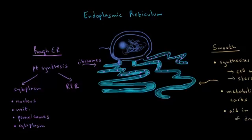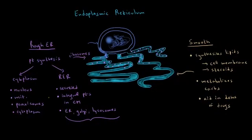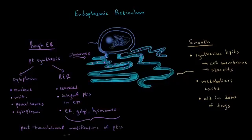In contrast, proteins that are synthesized in the rough endoplasmic reticulum will either be secreted into the extracellular environment, or they will end up becoming integral proteins in the cell membrane, or they might remain in the endoplasmic reticulum, Golgi apparatus, or lysosomes. Another thing that happens in the rough endoplasmic reticulum is post-translational modifications of proteins — for example, the formation of disulfide bridges.